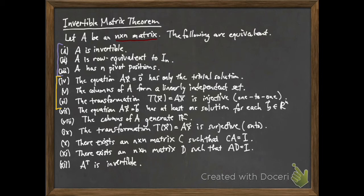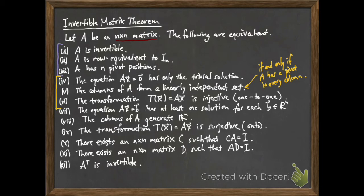The next three statements are ones we've shown are equivalent when looking at linearly independent sets and injective linear transformations. In particular, item four — the equation AX equals zero having only the trivial solution — is exactly the definition of the columns of A forming a linearly independent set. For a general matrix, not necessarily square, the columns form a linearly independent set if and only if the matrix has a pivot in every column, so the number of pivots equals the number of columns.